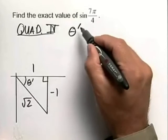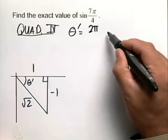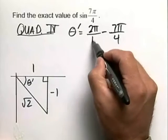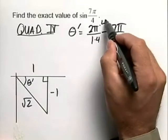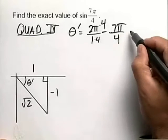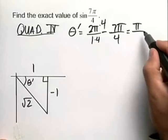For our purposes, theta prime, our reference angle, is going to be equal to 2π minus our 7π/4. Now we need to get a common denominator here of 4, so we'll multiply top and bottom by 4. We'll have 8π/4 minus our 7π/4, so theta prime for our example is π/4.